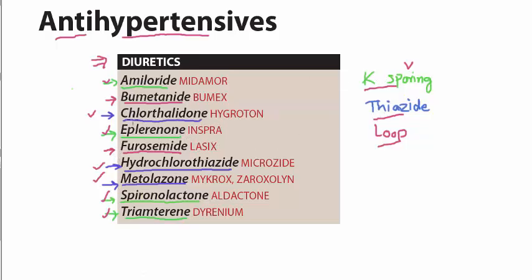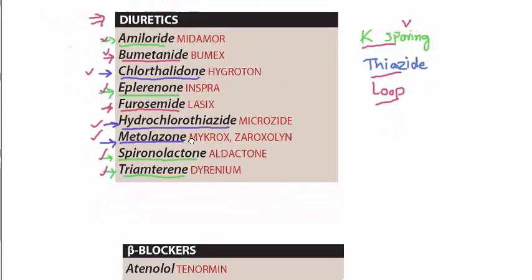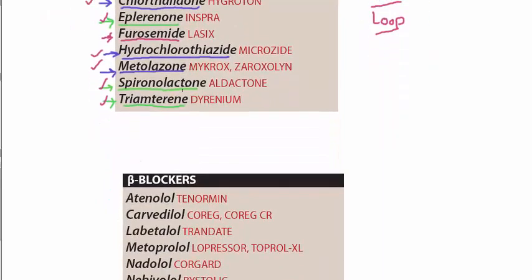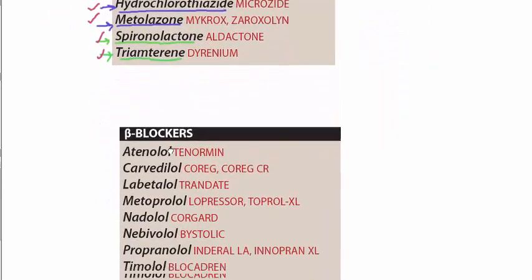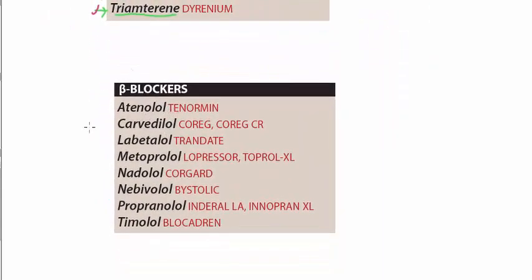In the loop diuretics we have two drugs: bumetanide and furosemide. So these are the diuretics commonly used to treat hypertension.